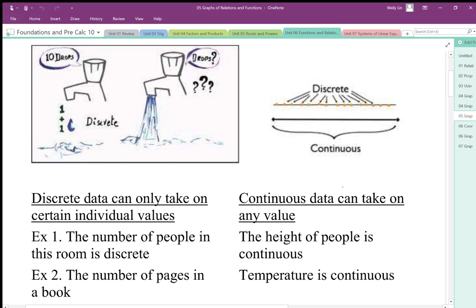A continuous variable is when we can take on all the values. On a number line, it can take on all values from negative 1 all the way to 0 and every decimal in between.